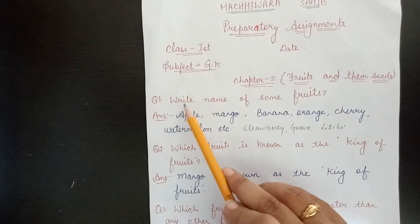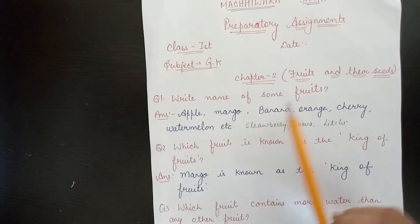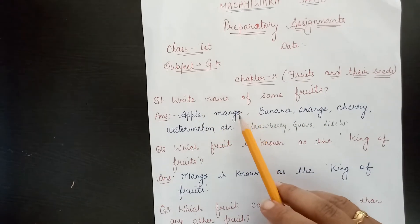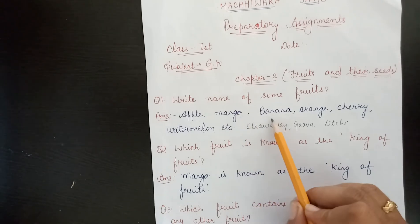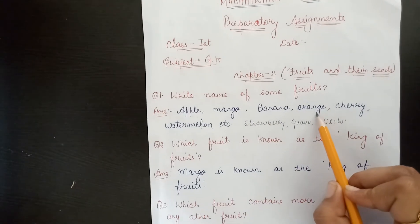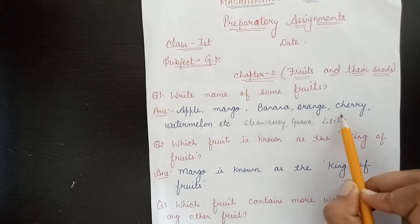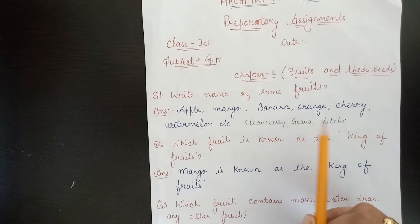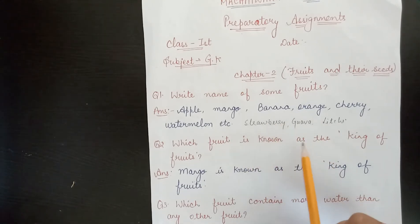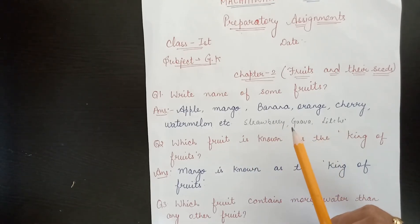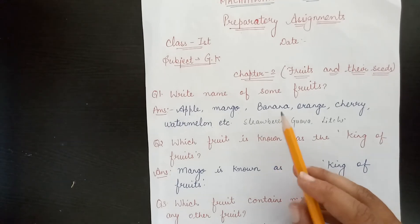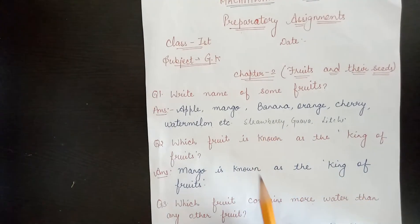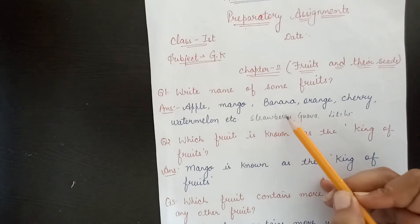The question is: write the name of some fruits. Some fruits are apple, mango, banana, orange, cherry, watermelon, etc. You can also add fruits like strawberry, guava, or plum. You should write at least six to seven fruits.